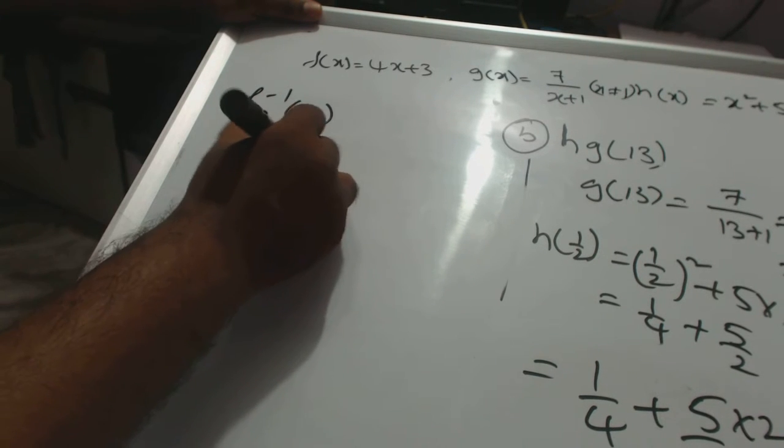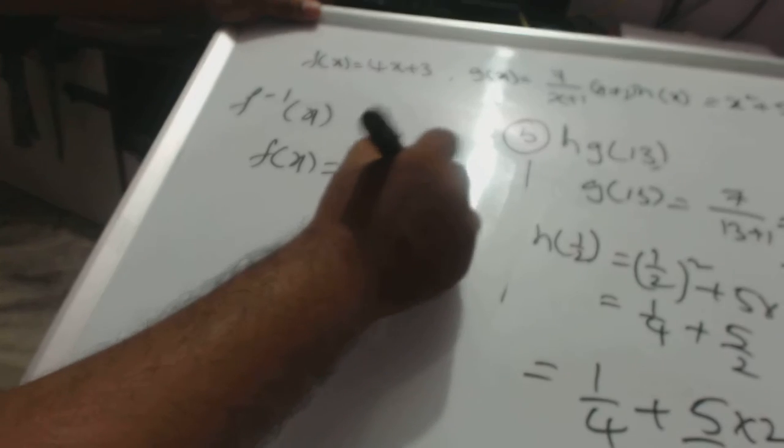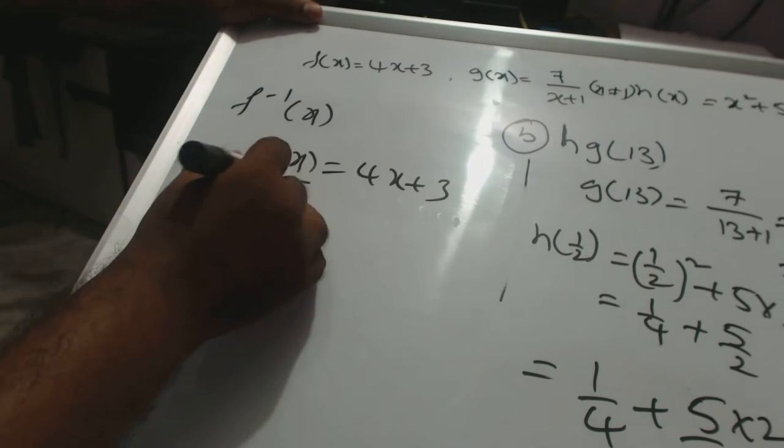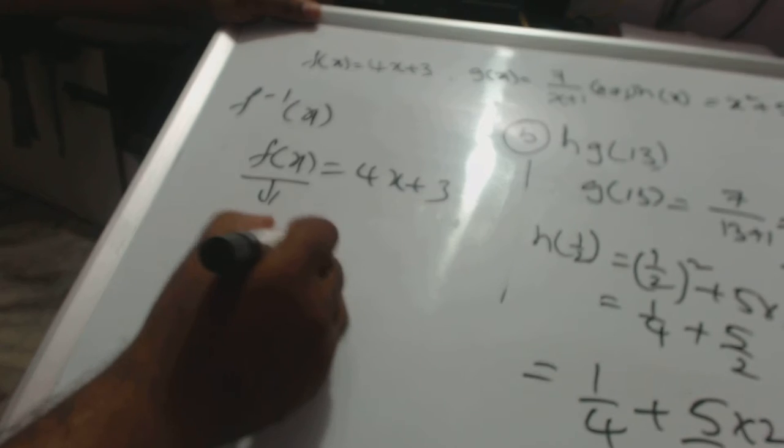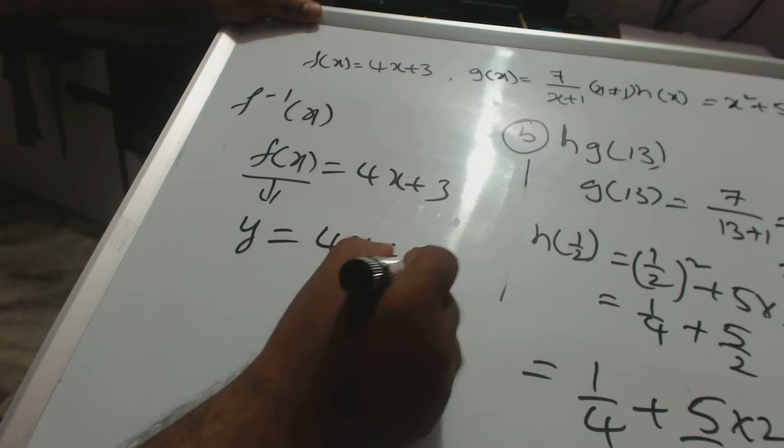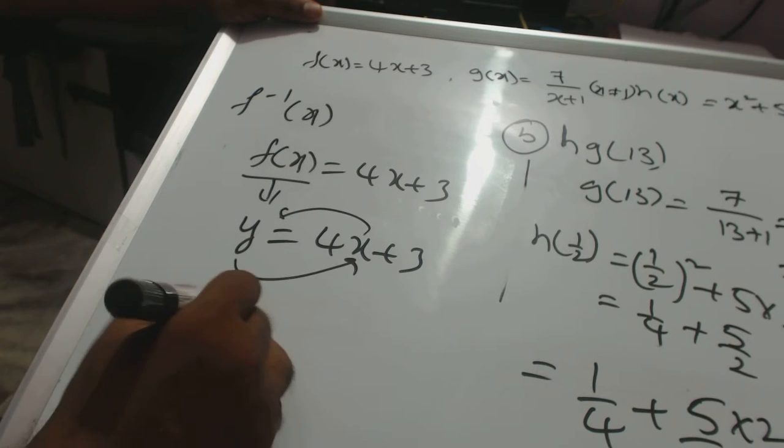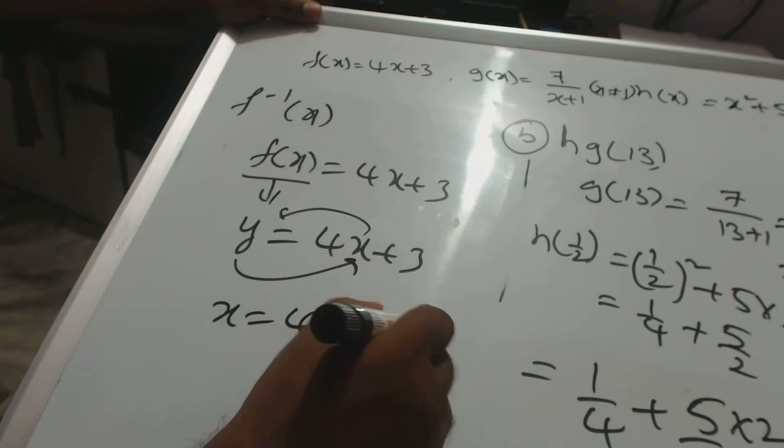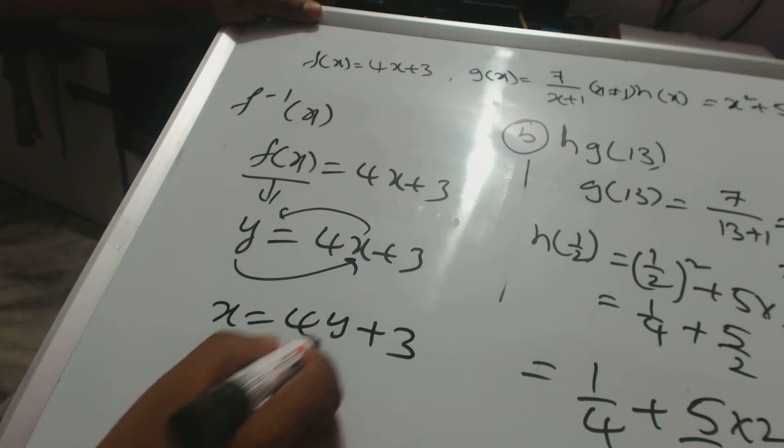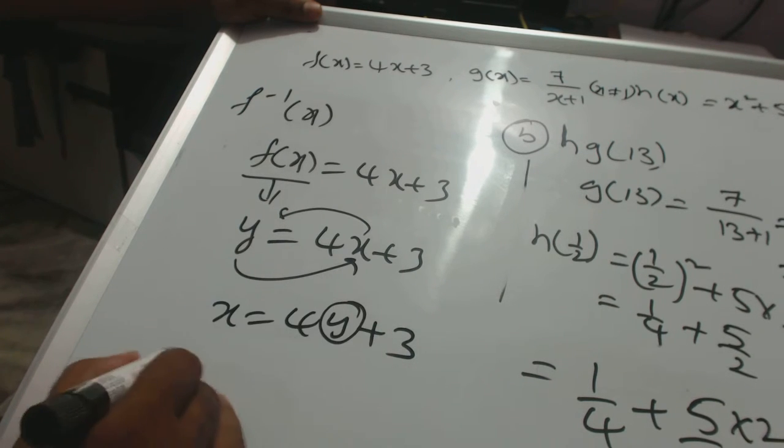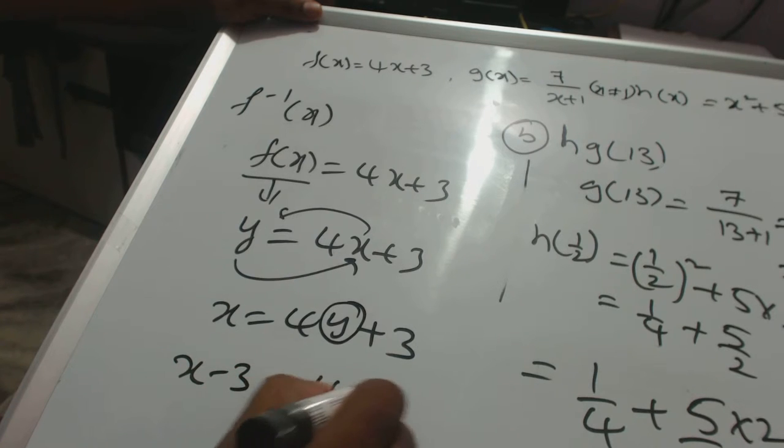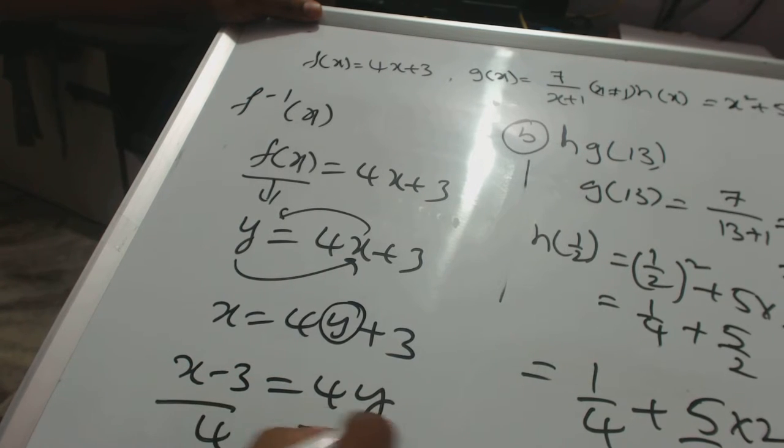First take f of x is equal to 4x plus 3. Then wherever the f of x is there, just take y, so y equals 4x plus 3. Now swap x and y. Then x is equal to 4y plus 3. Now make y as a subject. x minus 3 is equal to 4y. So divide with 4 on both sides.